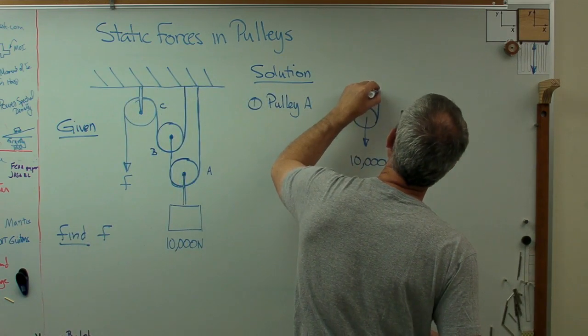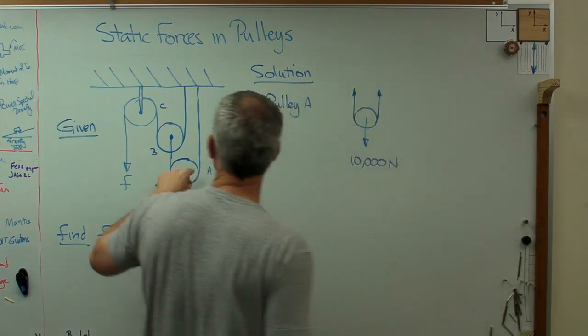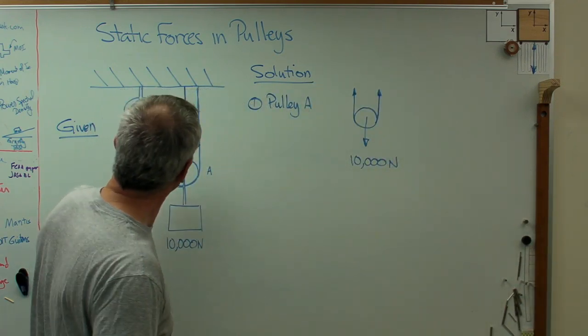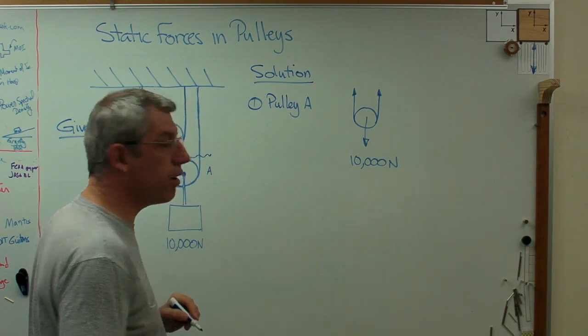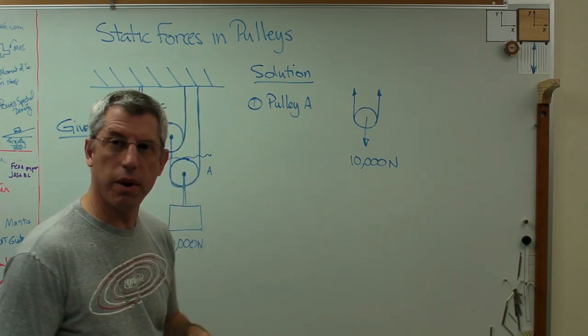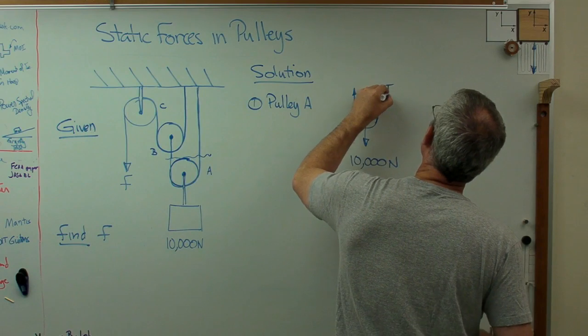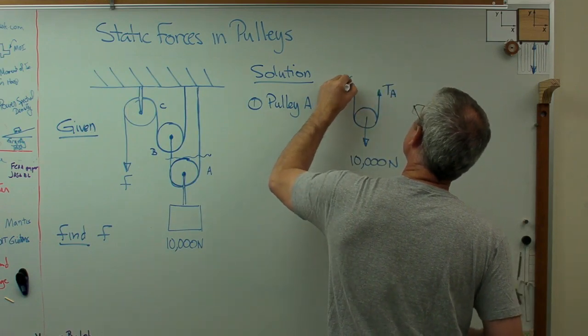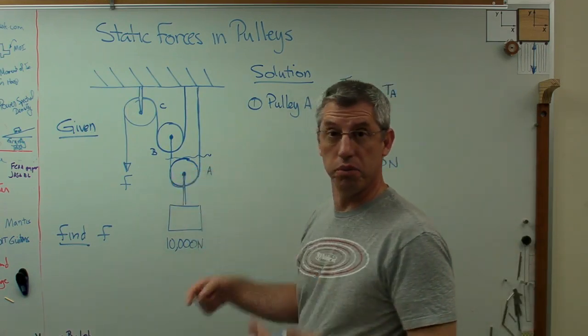And I've got the tension of these cables here, or this one cable. But since it's coming up on that side and that side, I can cut it right there if I want. That's actually almost like the method of sections, isn't it? And I'm going to call that TA and that TA, tension at pulley A.